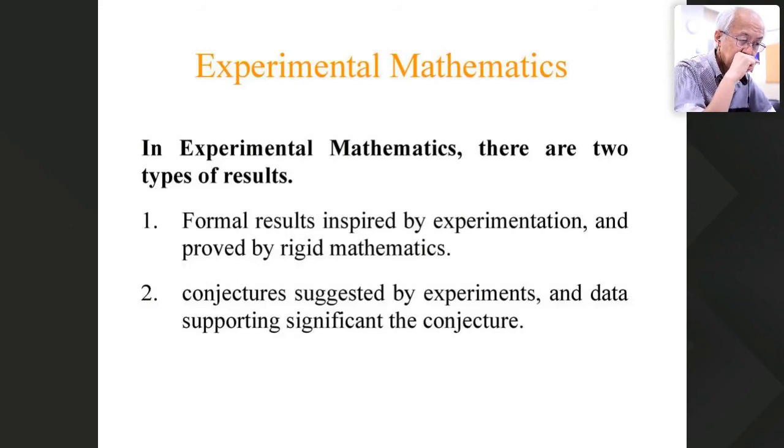In experimental mathematics, there are two types of results. One is the formal result inspired by experimentation and proved by rigid mathematics. And another result is conjectures suggested by experiment and data supporting the conjecture. So in our case, our formula is, in the strict sense of the word, it's a conjecture.